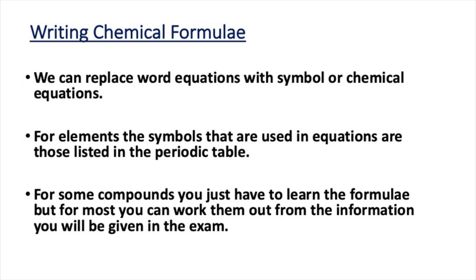You should now be able to interpret chemical formulae. In the next part of the video we're going to look at how we write chemical formulae. Being able to write chemical formulae means we can progress from writing simple word equations to describe a chemical reaction to full chemical equations. When replacing the name of an element in a word equation with a symbol, we use the symbol from the periodic table. For a compound, we replace the name with its chemical formula.